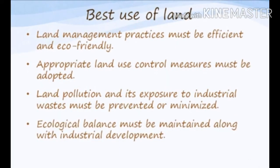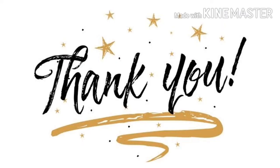The best use of land is proper management. It should be eco-friendly. We must adopt control measures to prevent land pollution and exposure to industrial waste. We also have to maintain our ecological balance alongside industrial development, so that the use of land is the best use. We must conserve and protect our resources by adopting such control measures. Here we finish our first part: land resources.